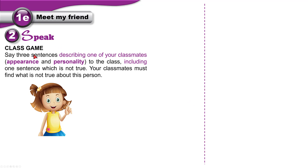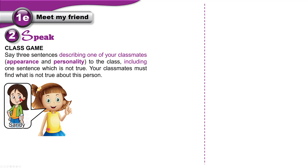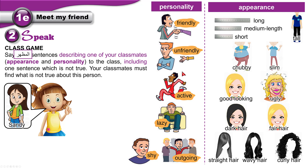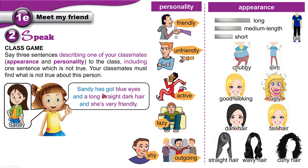For the speaking activity: say three sentences describing one of your classmates. Use the adjectives — talk about their personality and appearance. Include one sentence which is not true, so you say two true sentences and one false sentence, and your classmates must find what is not true about this person.